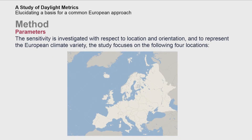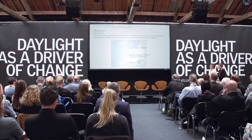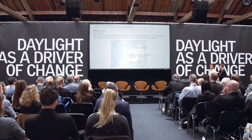Most important for the parametric analysis is the investigation of both orientation and location-specific changes. To investigate the impact and variety caused by the changing European climate, four locations are used: the northern location of Kiruna, the two more central locations of Copenhagen and Berlin, and the southern location of Rome. Each metric is calculated for the standard room in all orientations, all locations, and for the five window elements.